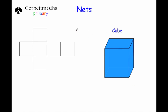Here we've got a cube, and this is the net of a cube — there are other types of nets of cubes but this is a common one. It's got 6 squares. This would be the base of the cube, and these 4 squares — 1, 2, 3, 4 — would fold up to be the sides of the cube, and then this one would fold over to be the top of the cube. So that shape is the net of a cube.